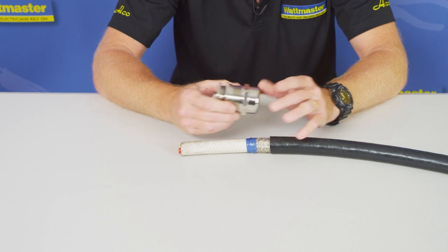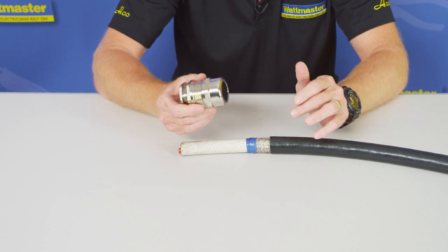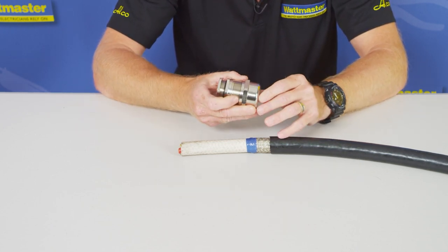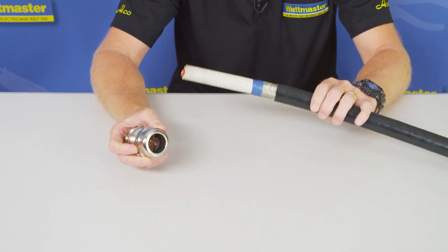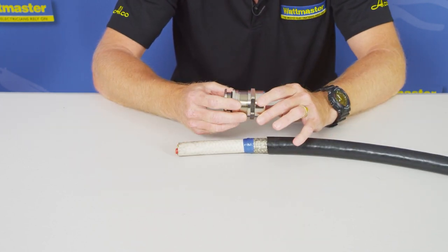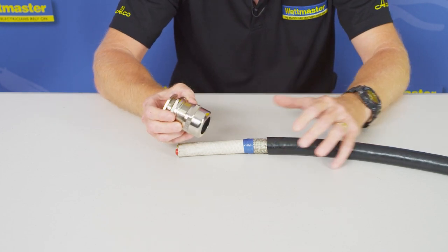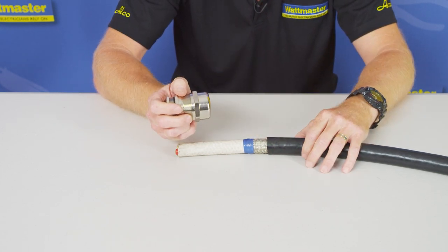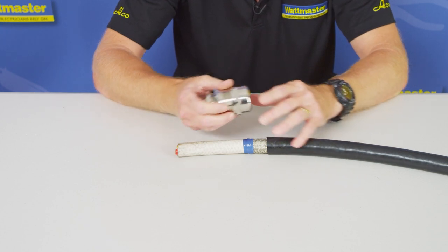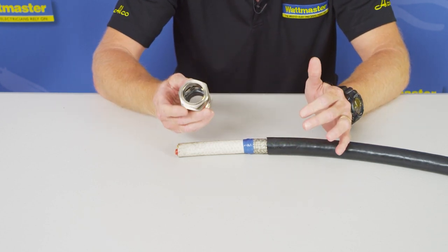So what we're going to do today is show you how to use firstly the EMC type gland with the fingers inside. I've prepared the cable earlier. What we're trying to do is create that Faraday cage for the cable and continue that braid through into the enclosure and onto the earth.